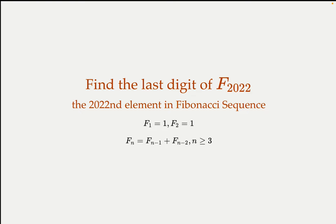Here we would like to find the last digit of the 2022nd element in the Fibonacci sequence. As we recall, the Fibonacci sequence starts with one and one, followed by a number that is the summation of the previous two terms. We want to find the last digit of that 2022nd element.